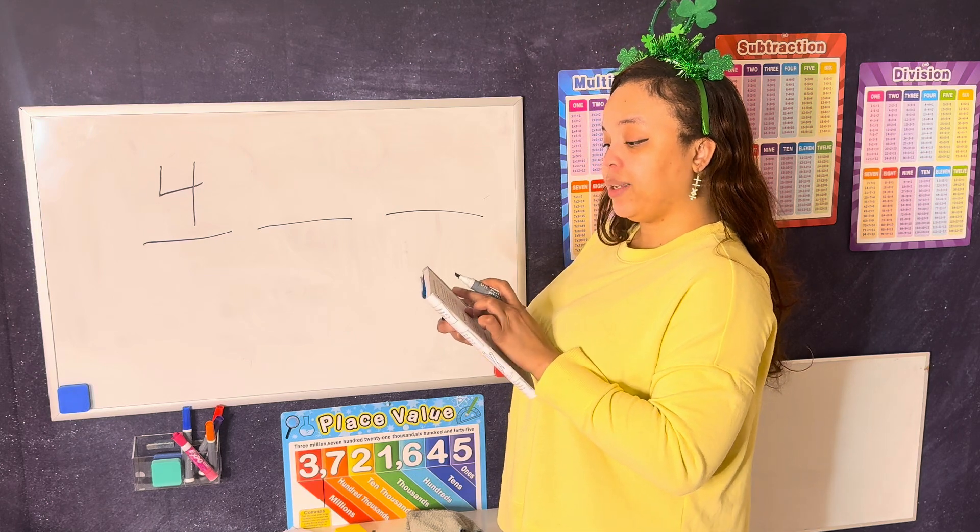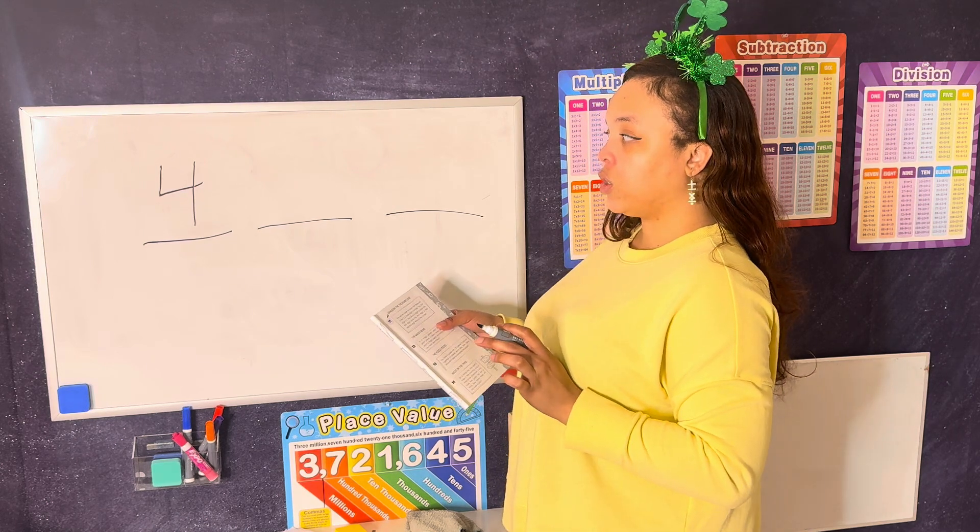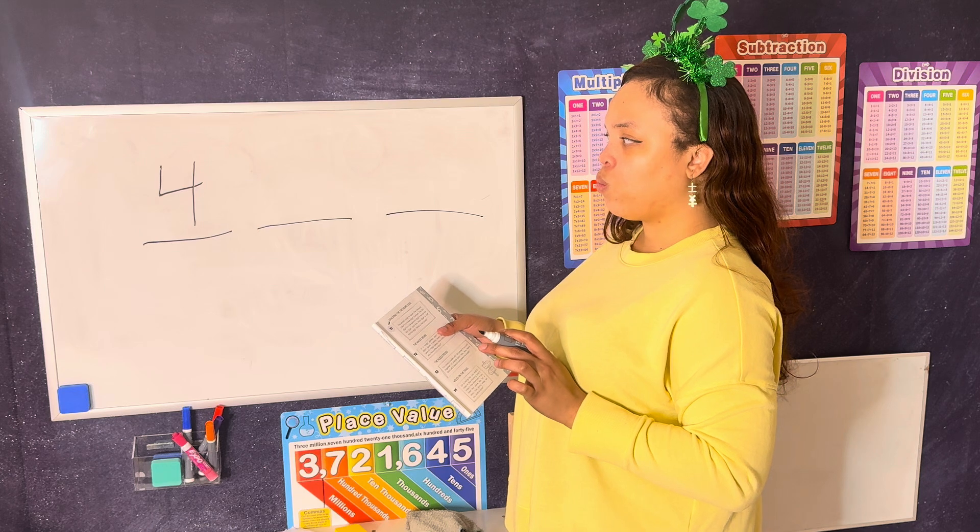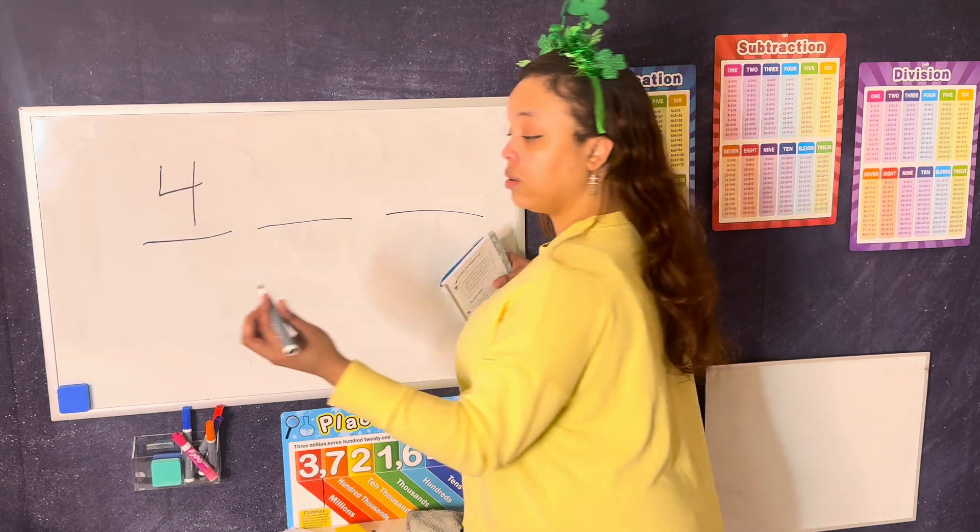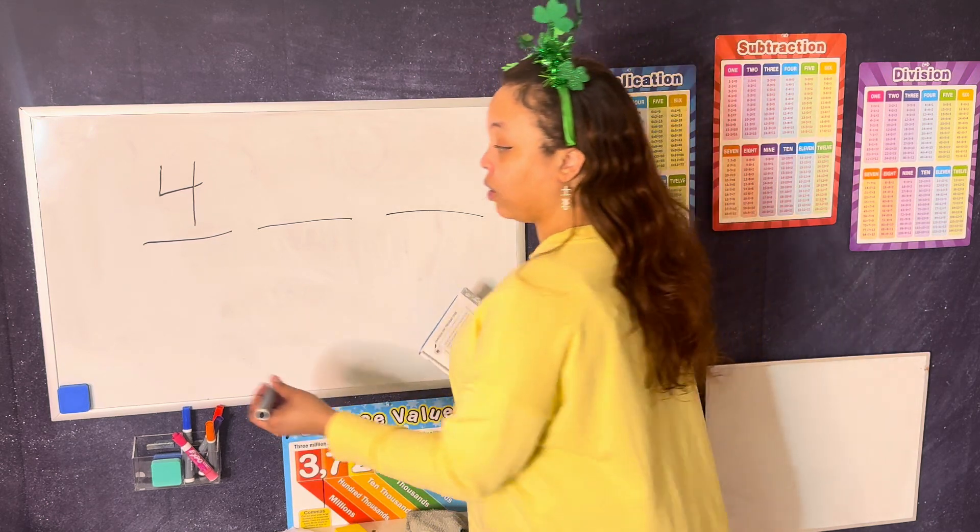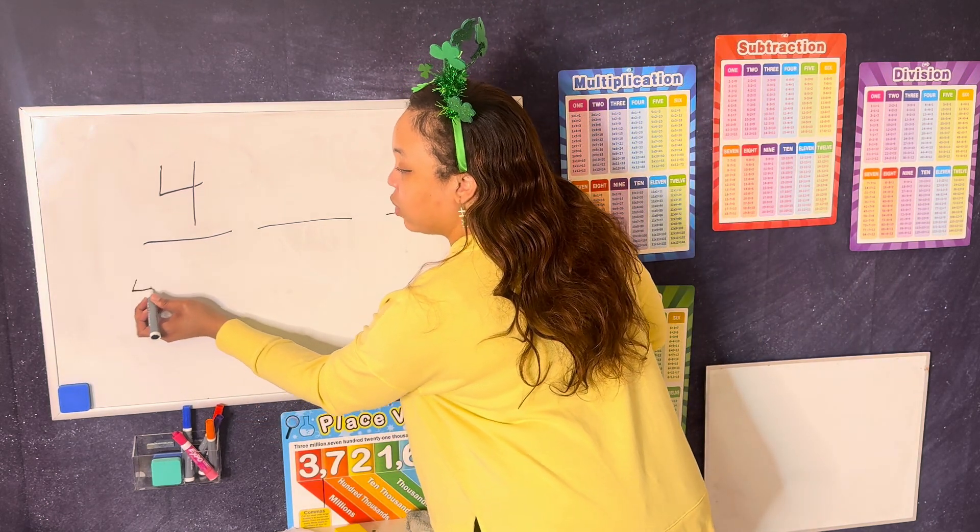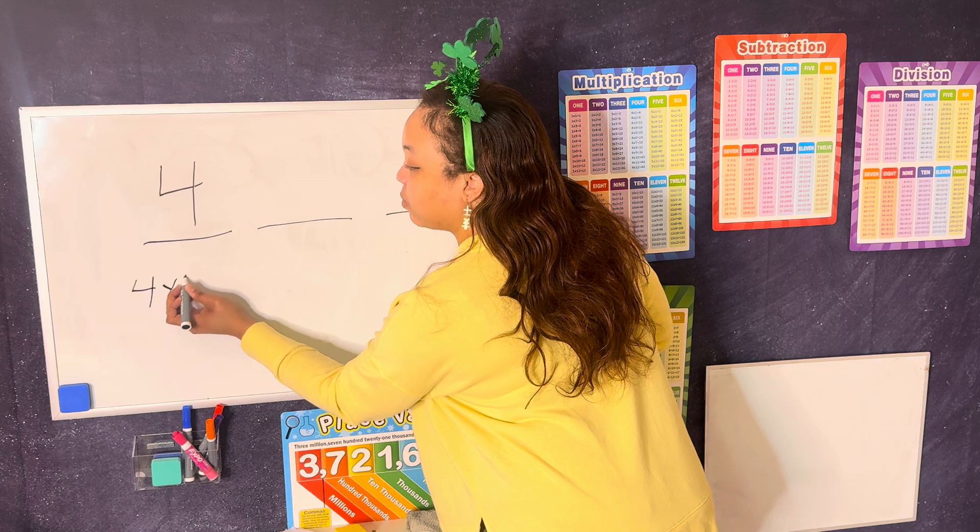The second digit is twice the first digit. So we can either do 4 plus 4 or since we know how to multiply now, we're going to do 4 times 2.